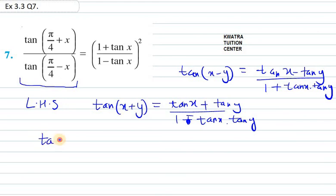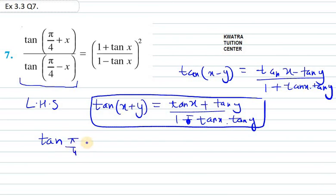So it will be tan, in the first one, x plus y. x plus y is, we need to use this formula. So it will be tan(π/4) plus tan y, that is tan x, plus over minus 1 minus tan x. Tan x is tan(π/4) dot tan y. Tan y is tan x.